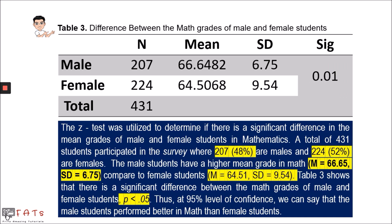For this example, our conclusion may look like this: 'The z-test was utilized to determine if there is a significant difference in the mean grades of male and female students in mathematics. A total of 431 students participated in the survey, where 207 or 48% are males and 224 or 52% are females. Table 3 shows that there is a significant difference between the math grades of male and female students (p = 0.006, p < 0.05). Thus, at the 95% level of confidence, we can say that the male students perform better in math than female students.'